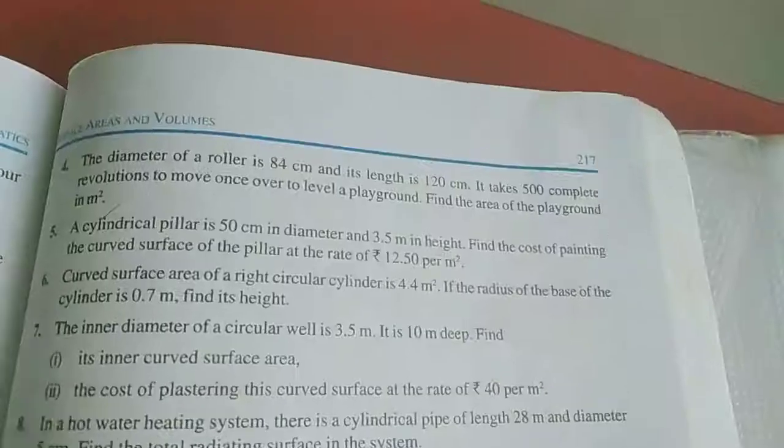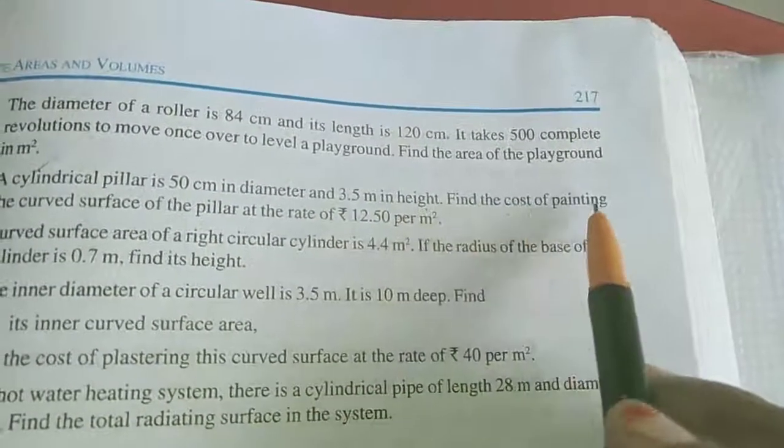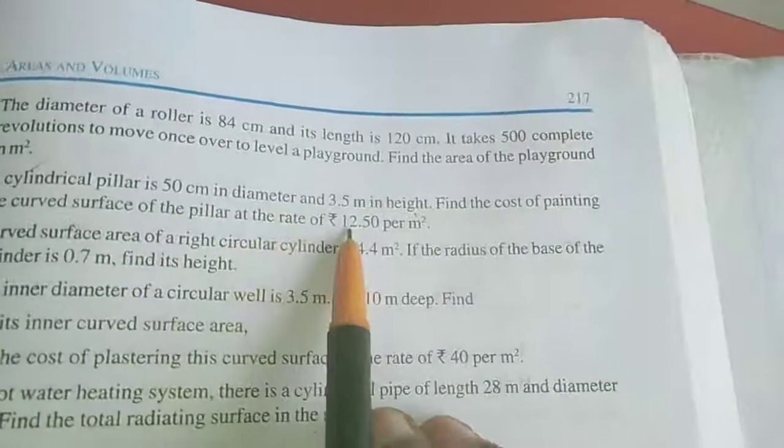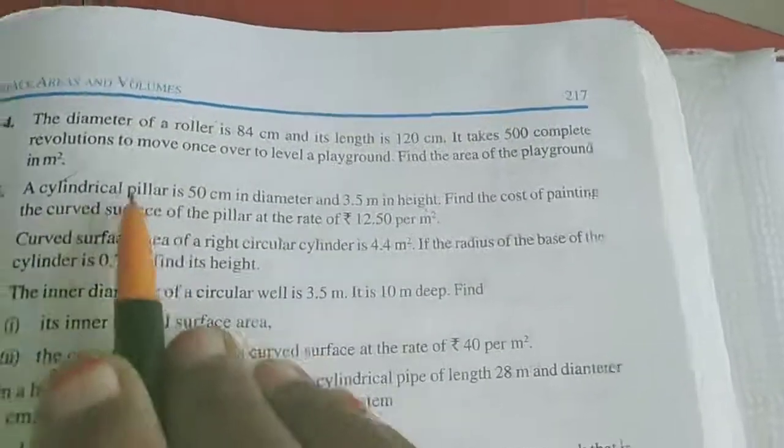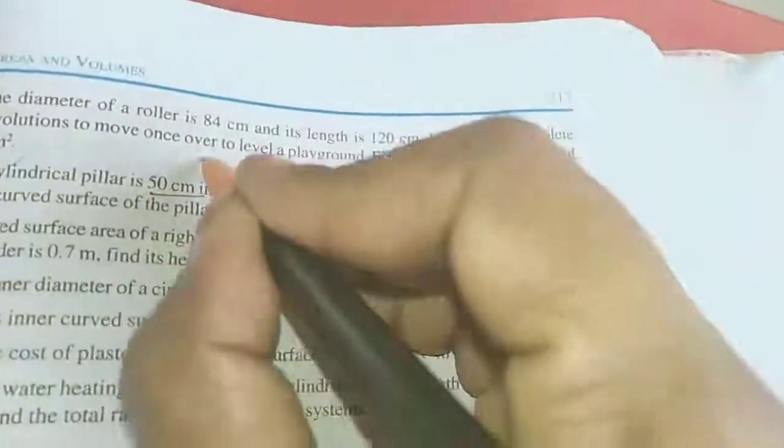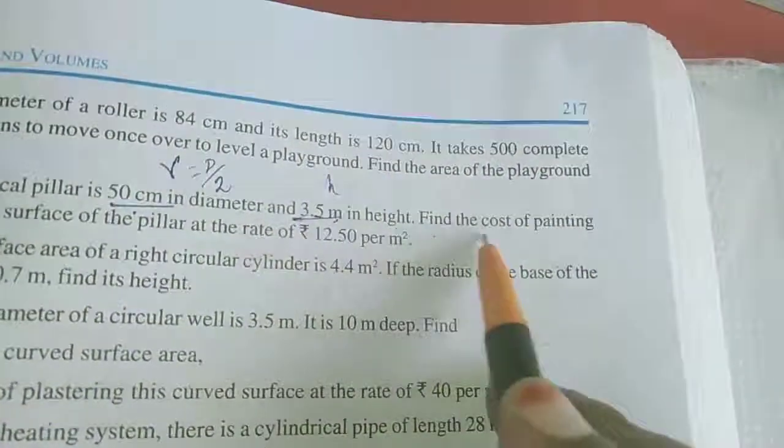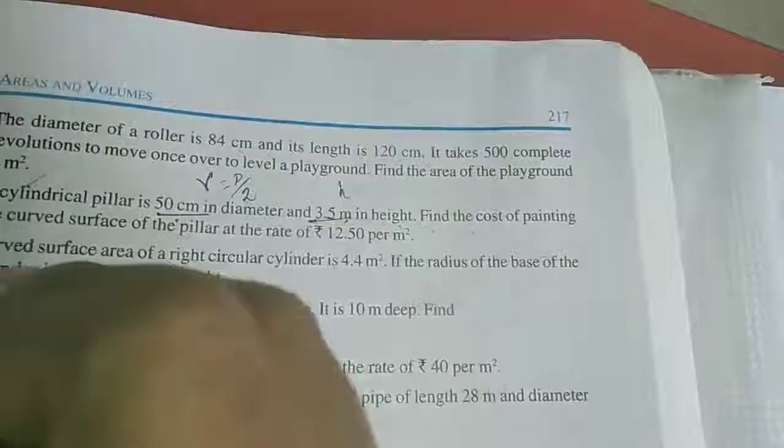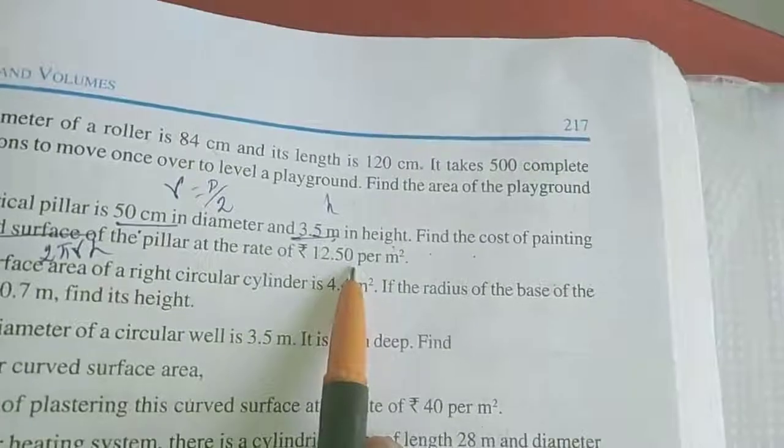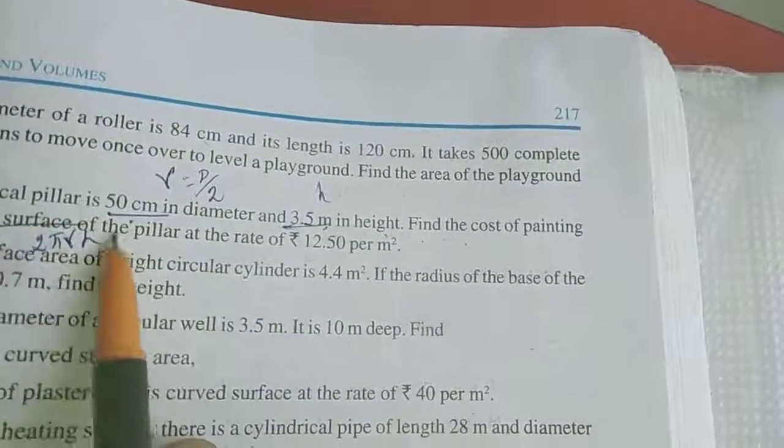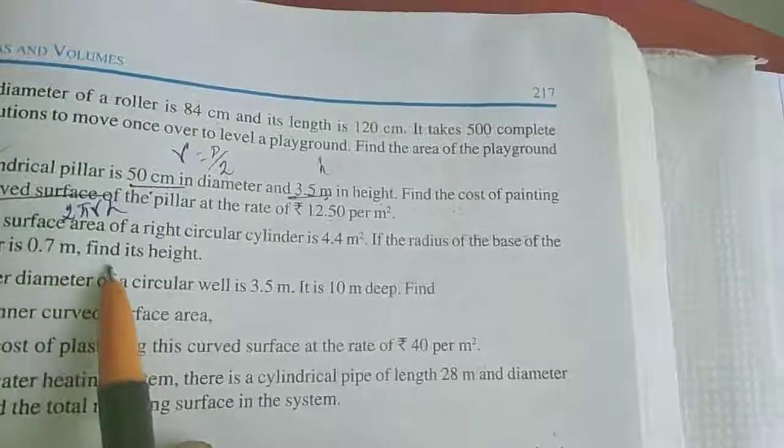Now we will move to the fifth sum. A cylindrical pillar is 50 cm in diameter and 3.5 meter in height. Find the cost of painting the curved surface area of the pillar at the rate of rupees 12.50 per meter square. That is 12 and half rupees. It's a cylindrical shape, diameter is given, so radius is D by 2. Height h. Find the cost of painting the curved surface. Use curved surface area formula 2πrh, then multiply by the rate. So 5th sum is homework for you.